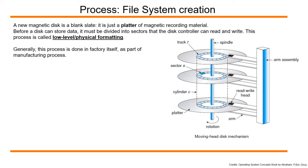When I request a Unix team for a new file system, the Unix team works with the storage team for disk allocation. When they allocate a new magnetic disk, it is just a blank slate - just a platter of magnetic recording material.